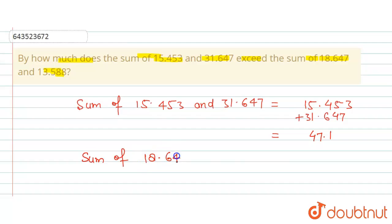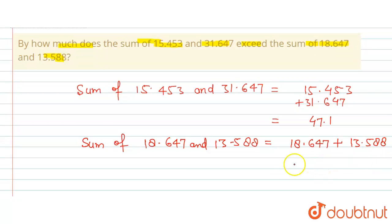This is the sum of these two numbers. Now we will find the sum of 18.647 and 13.588. So this is going to be equal to 18.647 added to 13.588, so the sum will be equal to 32.235.